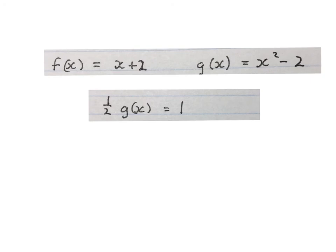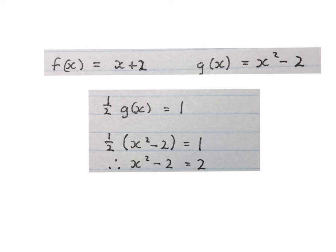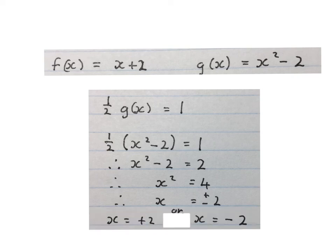Still using the same two functions, they ask us: solve a half of G of X equals 1. If the F is not mentioned, it's just there to confuse you — you only use G of X. Write a half of whatever G of X is, equal to 1. Dividing both sides by a half gives X squared minus 2 equals 2. Adding 2 to both sides and taking the square root gives X equals plus or minus 2.